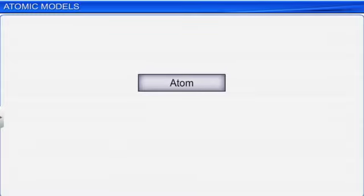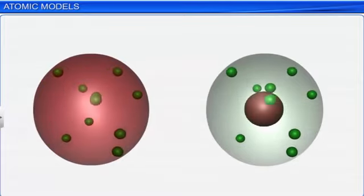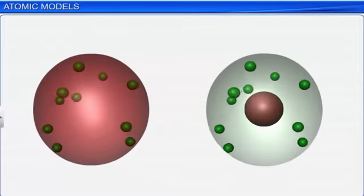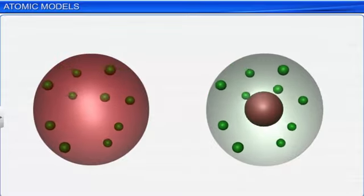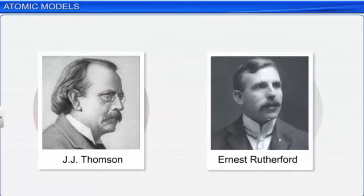Through various experiments, it was established that an atom consists of subatomic particles such as protons, electrons, and neutrons. Now, let us look at the arrangement of these subatomic particles in an atom. Different models were proposed to explain the distribution of subatomic particles in an atom. Of these models, the models proposed by J.J. Thomson and Ernest Rutherford are of great significance, as they paved the way for the modern structure of an atom.